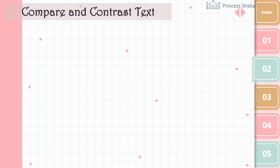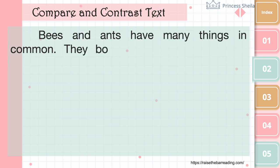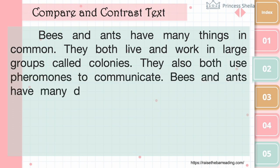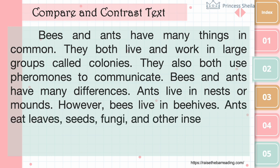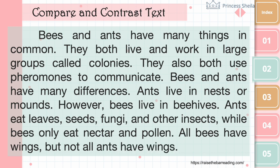Here's an example paragraph. Bees and ants have many things in common. They both live and work in large groups called colonies. They also both use pheromones to communicate. Bees and ants have many differences. Ants live in nests or mounds, however bees live in beehives. Ants eat leaves, seeds, fungi, and other insects, while bees only eat nectar and pollen. All bees have wings, but not all ants have wings.